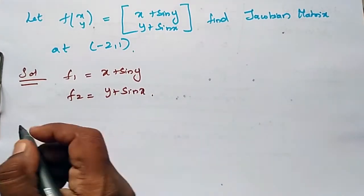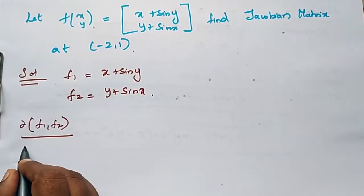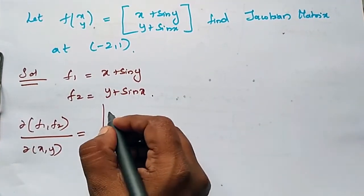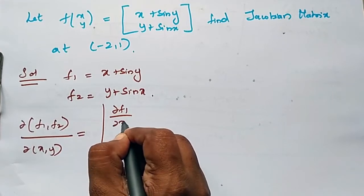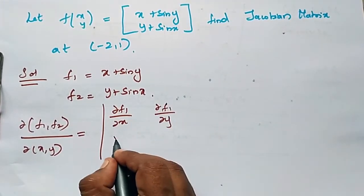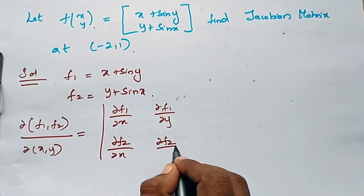∂(f1, f2) / ∂(x, y) equals [∂f1/∂x, ∂f1/∂y; ∂f2/∂x, ∂f2/∂y].